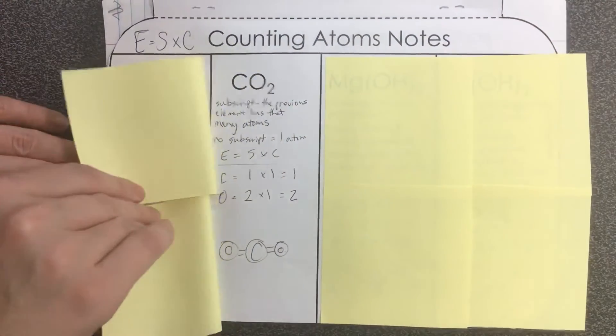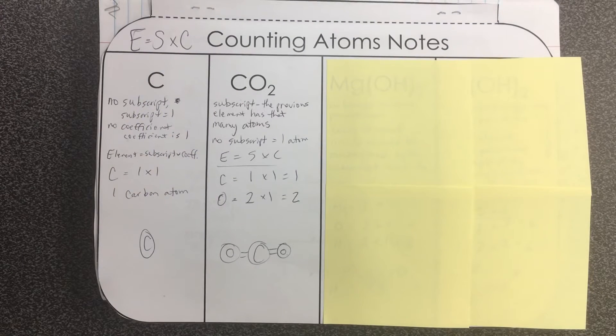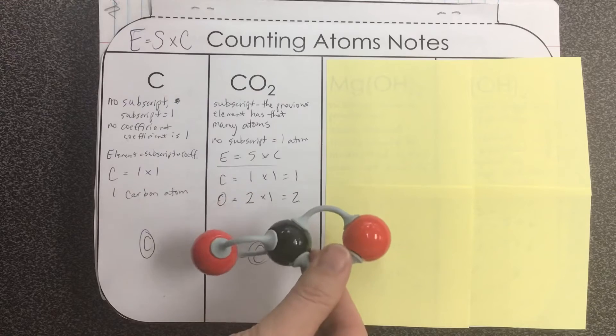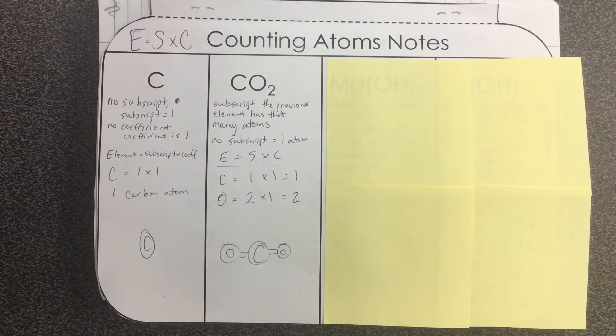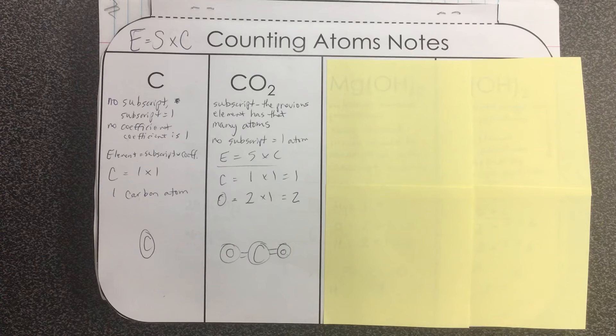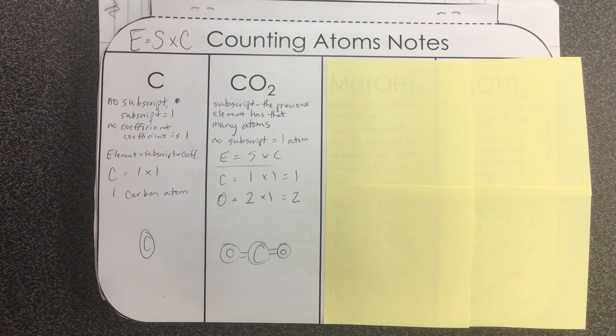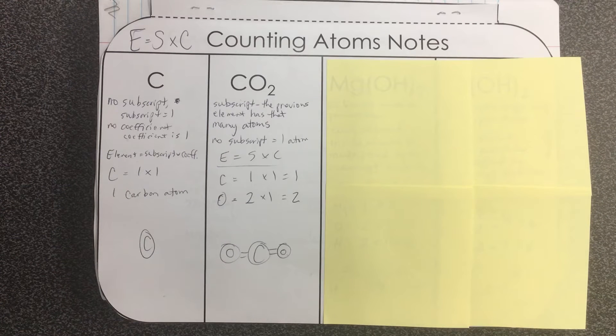In a more realistic situation with carbon, it'll buddy up like I showed you with some oxygens and make a molecule like CO2. In this case you do have a subscript. The subscript you're going to apply that to the previous element. So the element that it's right next to is going to have that many atoms.